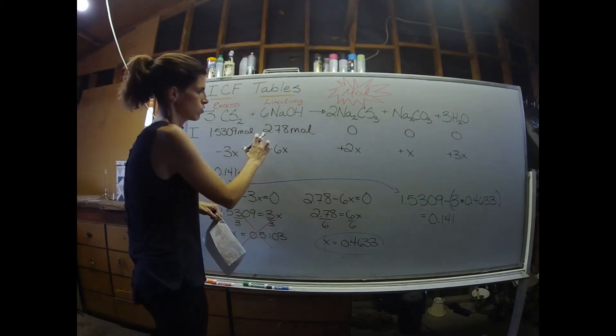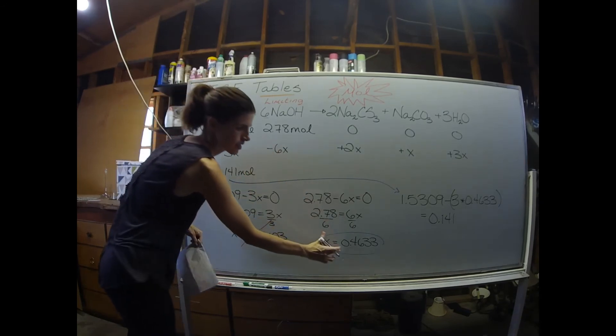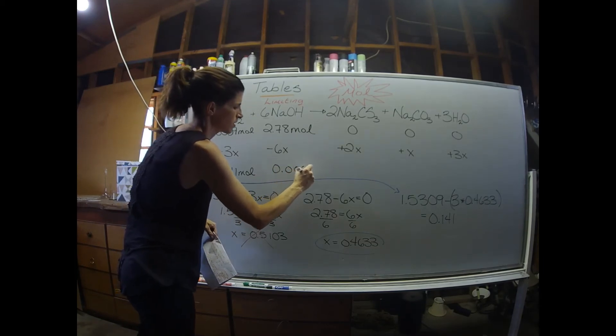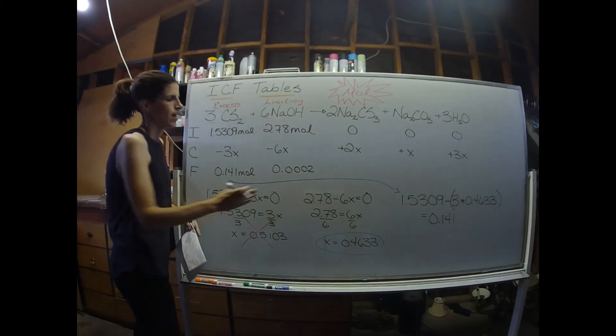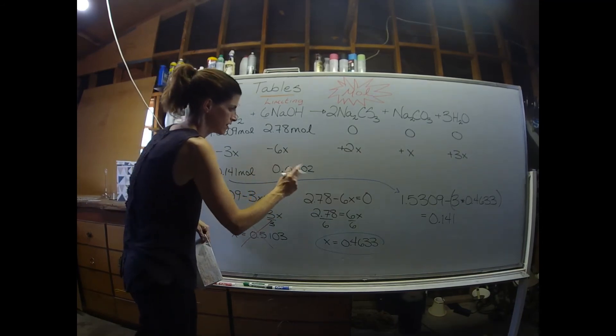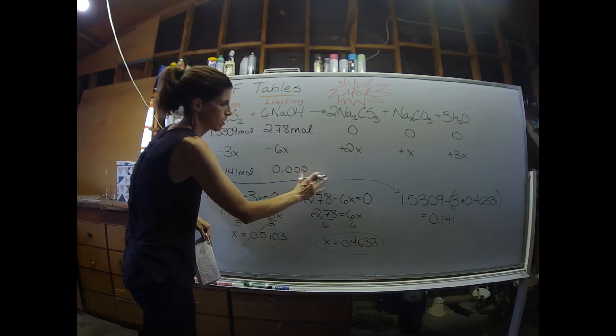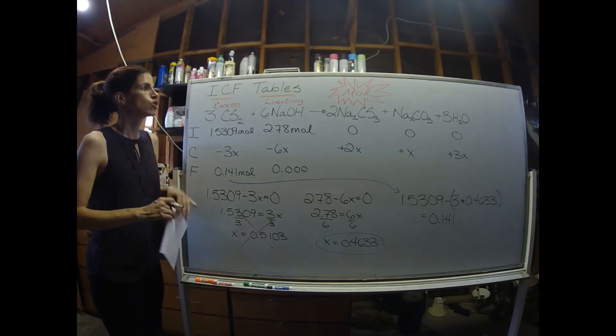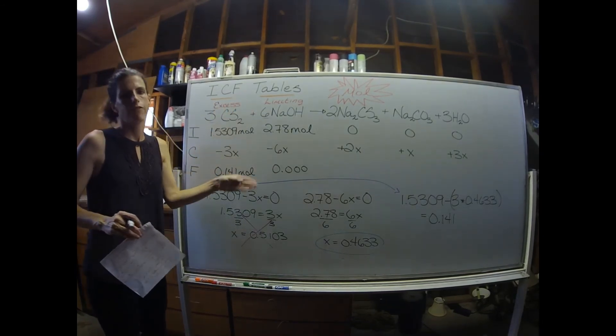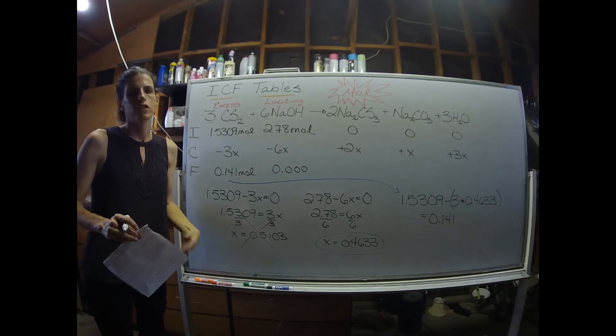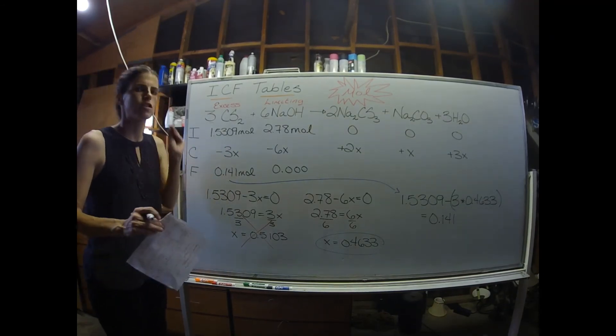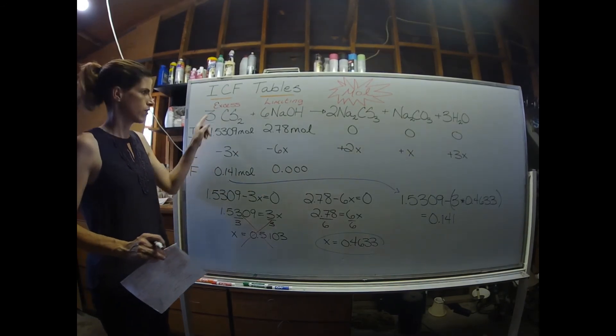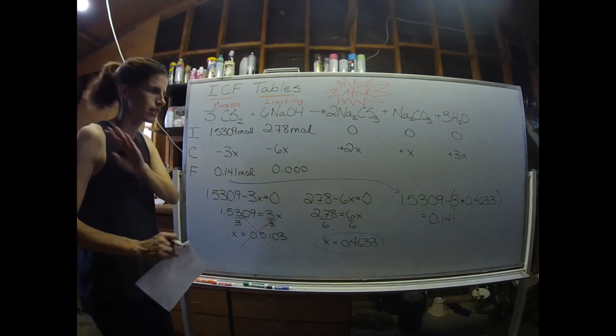Do the same thing here. We're going to do 2.78 minus 6 times this value. When I did that, I got something, because of the rounding, something like 0.002. At the end of the day, this is 0. It's because I rounded a tiny bit, but if you go back and check it with the full number, you're going to get a 0. You should always get a 0 with your limiting reactant in the final line, because that's the definition of a limiting reactant. A limiting reactant is the reactant that runs out. We're not going to have any of that left over. But this is the amount of carbon disulfide that we have left over. Sodium hydroxide is completely gone.